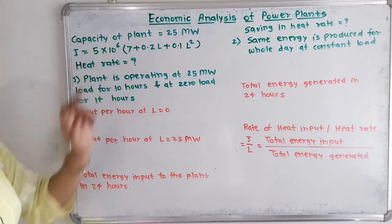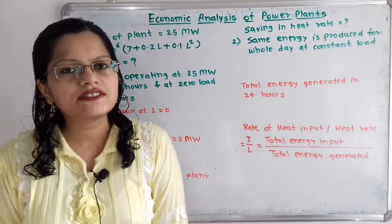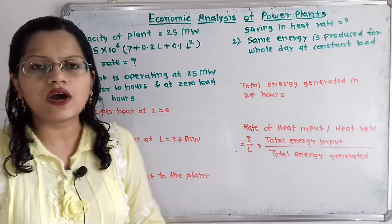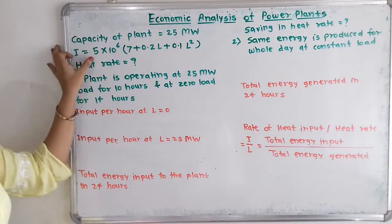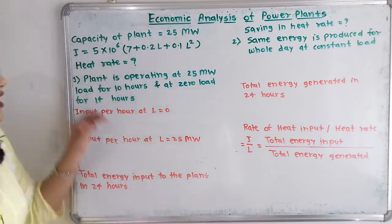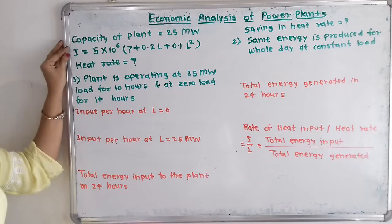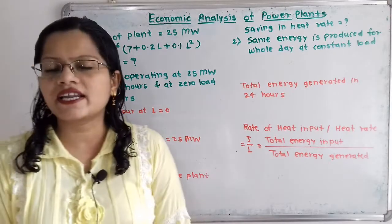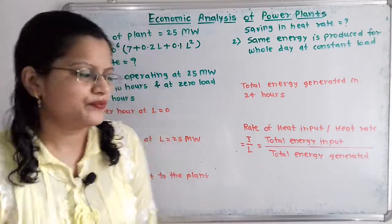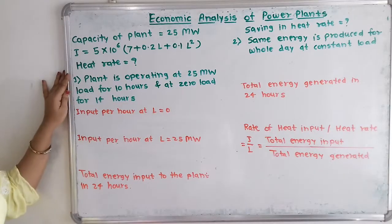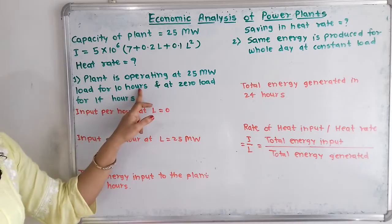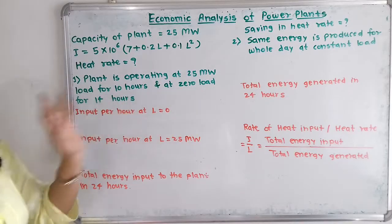We have to find out the heat rate. Heat rate is nothing but the ratio of input to output. So for this given input-output curve we have to first find out the total input for the given condition and then find the energy generated. The condition given is that the plant is operating at 25 megawatt load for 10 hours and at zero load for 14 hours.